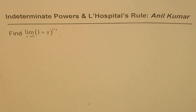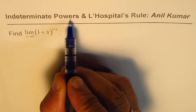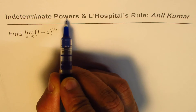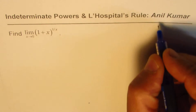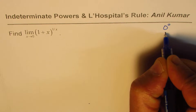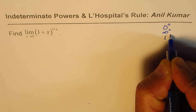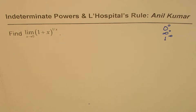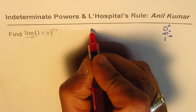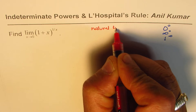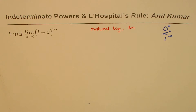I'm Anil Kumar and in this series of videos I'll consider very special cases of indeterminate forms where L'Hôpital's rule can be applied. All these videos will have indeterminate powers. When we say indeterminate powers, we are looking for examples of the type zero to the power of zero, infinity to the power of zero, or one to the power of infinity. These are very special cases where the strategy is to take the natural log on both sides to find the limits.